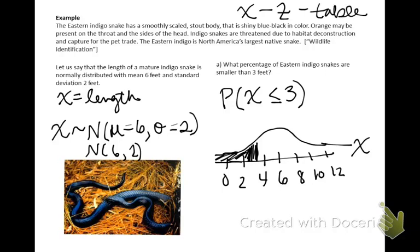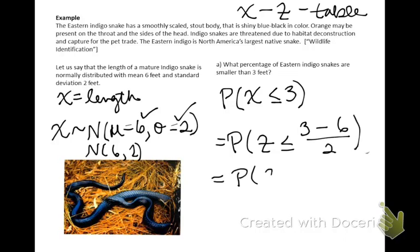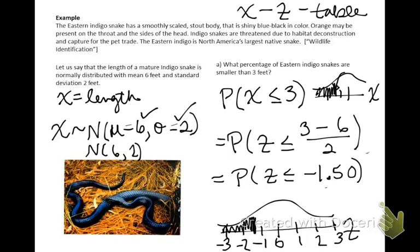Now I've written this in terms of x. On the x-distribution, 3 is 1 and a half tick marks below the mean of 6. To convert to z, take the observation of 3, subtract the mean of 6, and divide by the standard deviation of 2. This simplifies to negative 1.5. On the z-curve centered at 0, negative 1.5 is right here, and we're looking for the probability of being less than negative 1.5 on the z-distribution. The probability of being 3 or smaller on the x-curve equals the probability of being negative 1.5 or smaller on the z-curve.